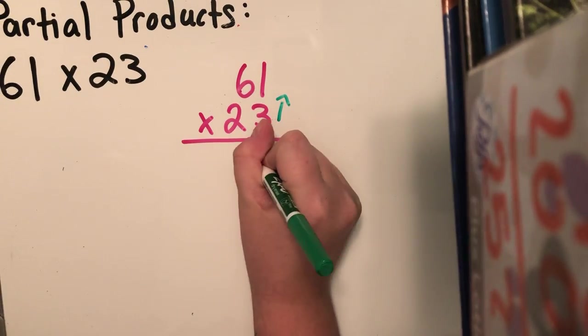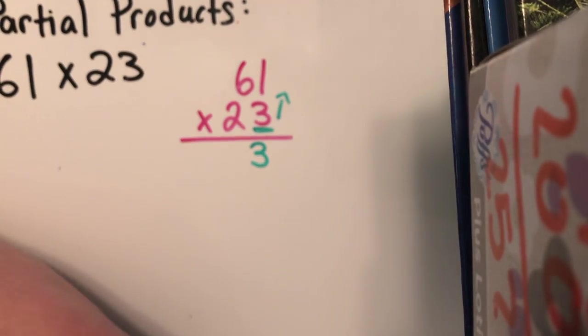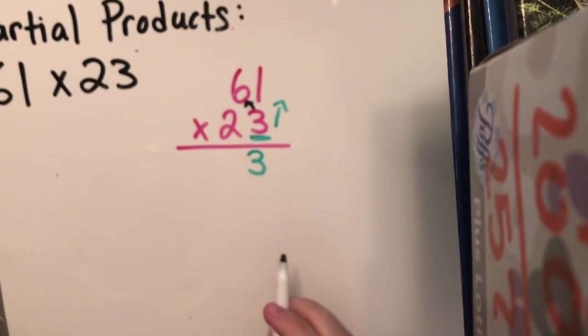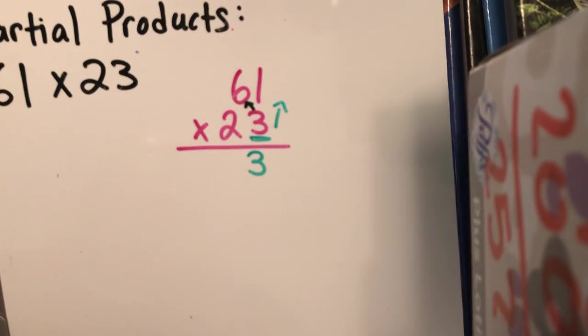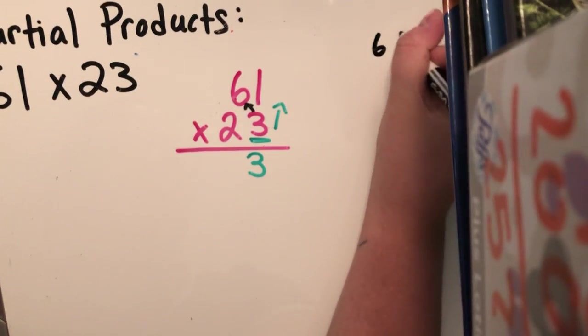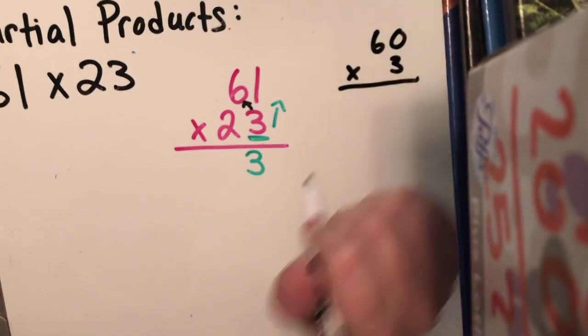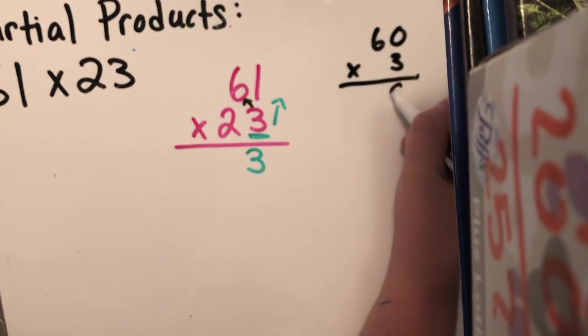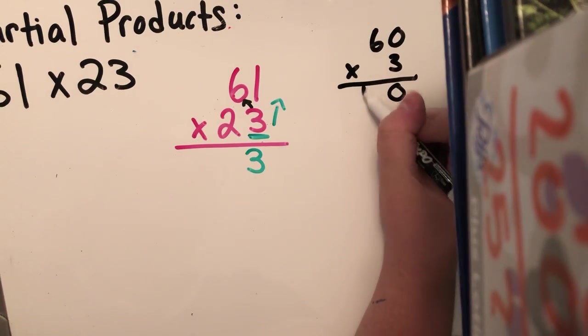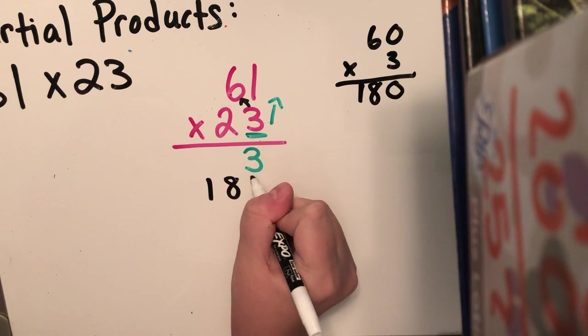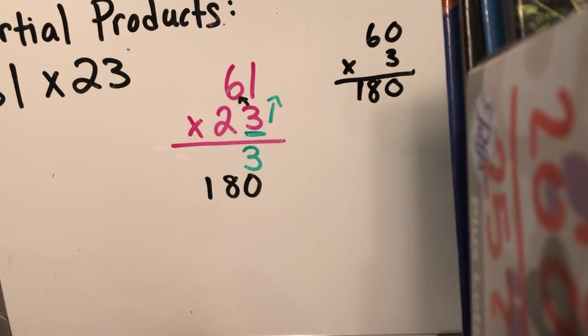I'm gonna go up the ones. So three times one is three. Now I'm gonna go across to the tens. Remember, this is no longer six, it's 60. Three times 60. If you can't do it in your head, don't try to do it. Don't try to guess, solve it out. So three times zero is zero. Three times six is 18. So I'm gonna write down 180, because 60 times three is 180.